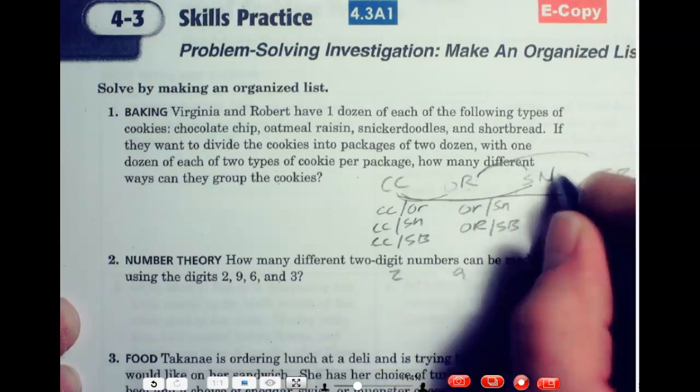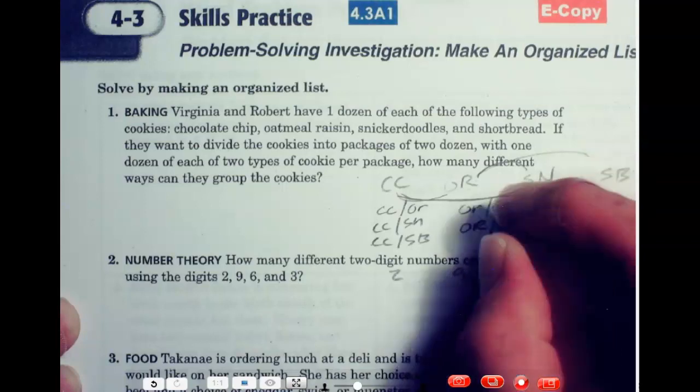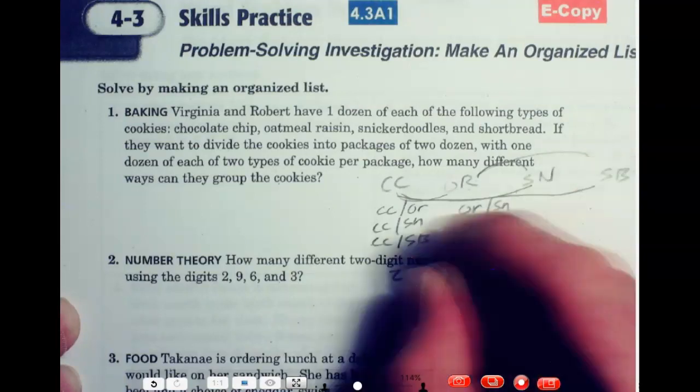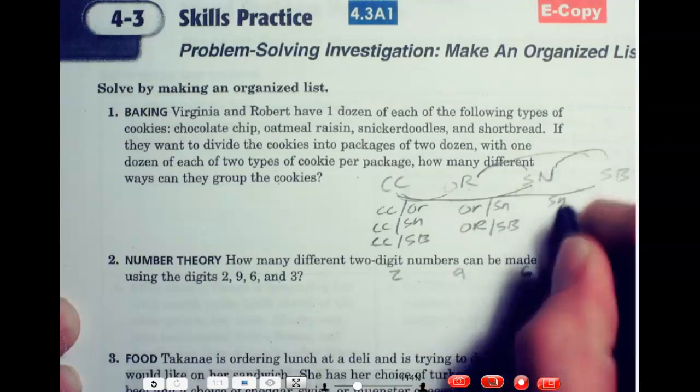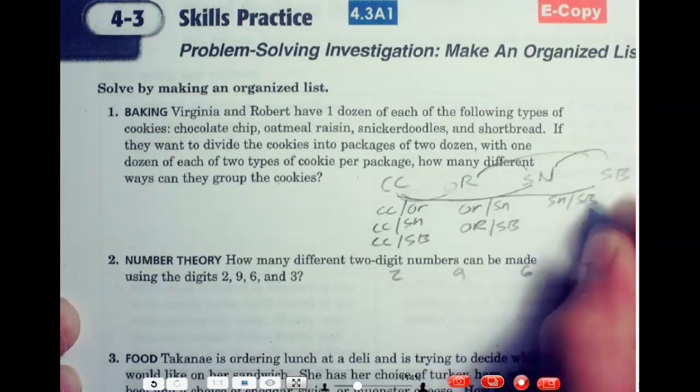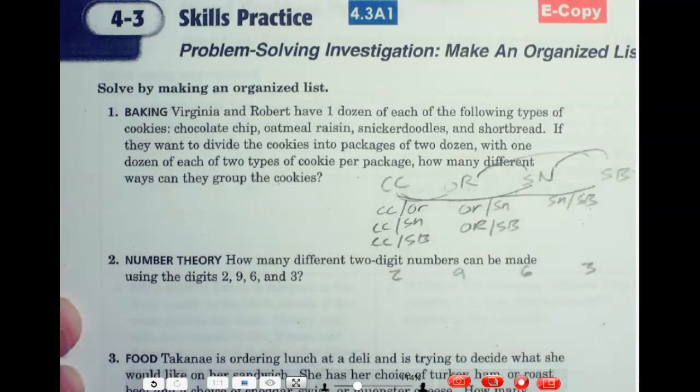Now, when we get to the snickerdoodles, we've already had snickerdoodles and oatmeal raisin. We've already had snickerdoodles and chocolate chip. But we haven't had snickerdoodles and shortbread. And that's the only one we can have.